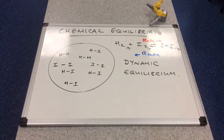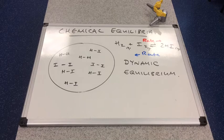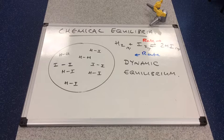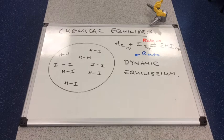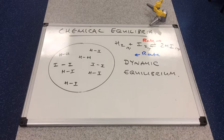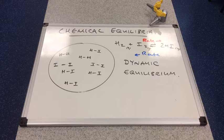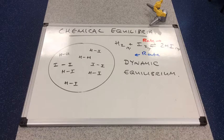The way I sometimes explain it in class is if you imagine a treadmill with somebody running on the treadmill, you've got a forward process which is the person running, and then the reverse process is the belt of the treadmill. When they are moving at the same speed, at the same rate, then effectively the runner is running on the spot, so they're not moving forwards or backwards, but they are still running. So it's a dynamic process, but because the runner and the belt is at the same rate, it's in equilibrium as well.